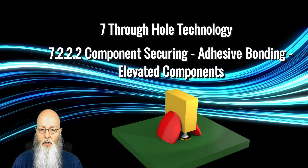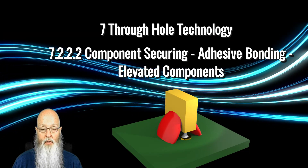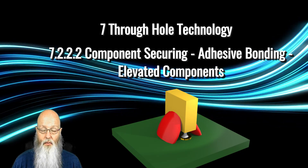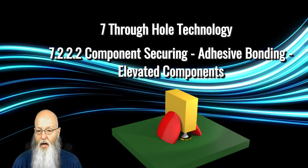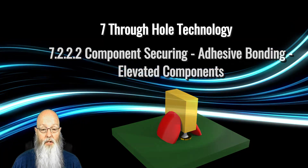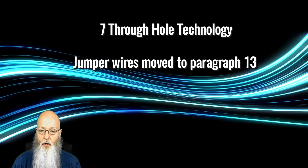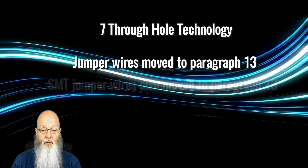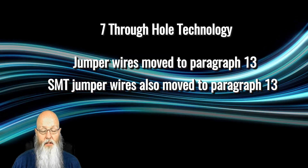Most of paragraph 7 also remains unchanged. 7.2.2.2 added criteria for the adhesive bonding of elevated components that are taller than they are wide or long. This isn't really a new section, rather the clarification of adhesive bonding for components such as box capacitors. The criteria is the same as found in the J-STD-001. One other modification to paragraph 7 is that the jumper wire criteria has been moved into a new section, paragraph 13. The same movement of the jumper wire criteria from paragraph 8, surface mount technology, has also been accomplished.